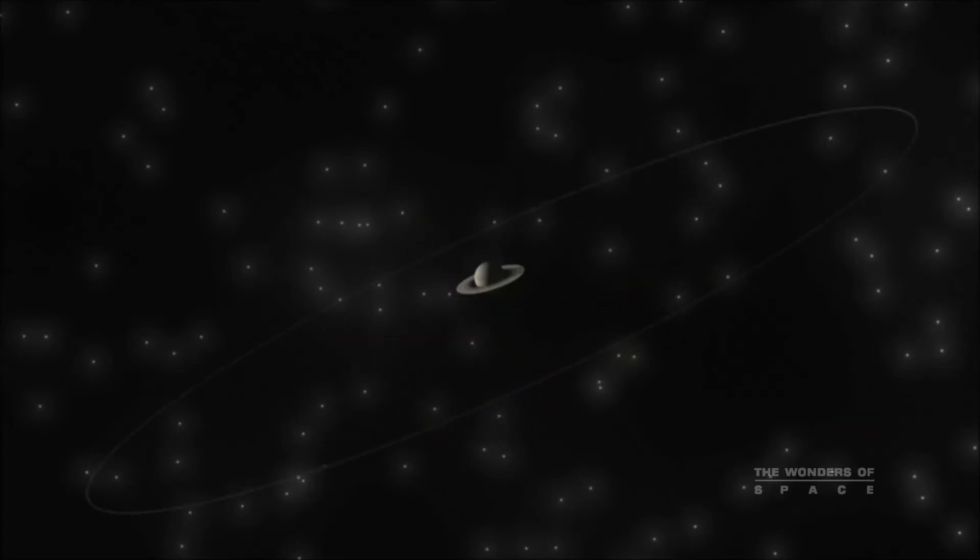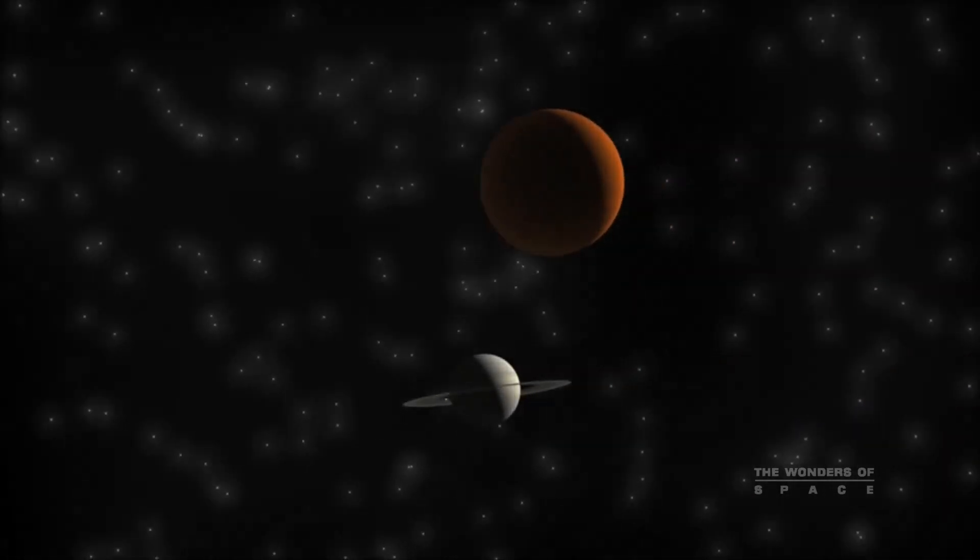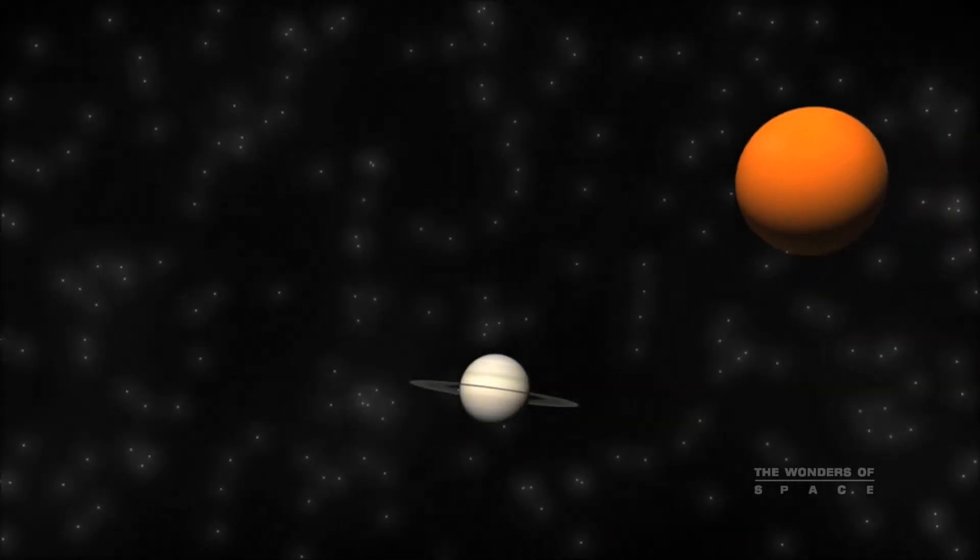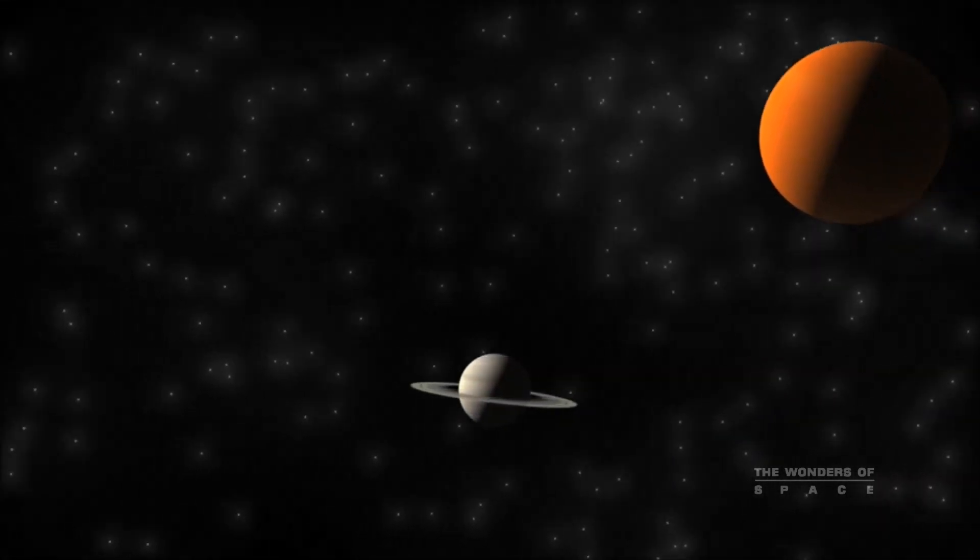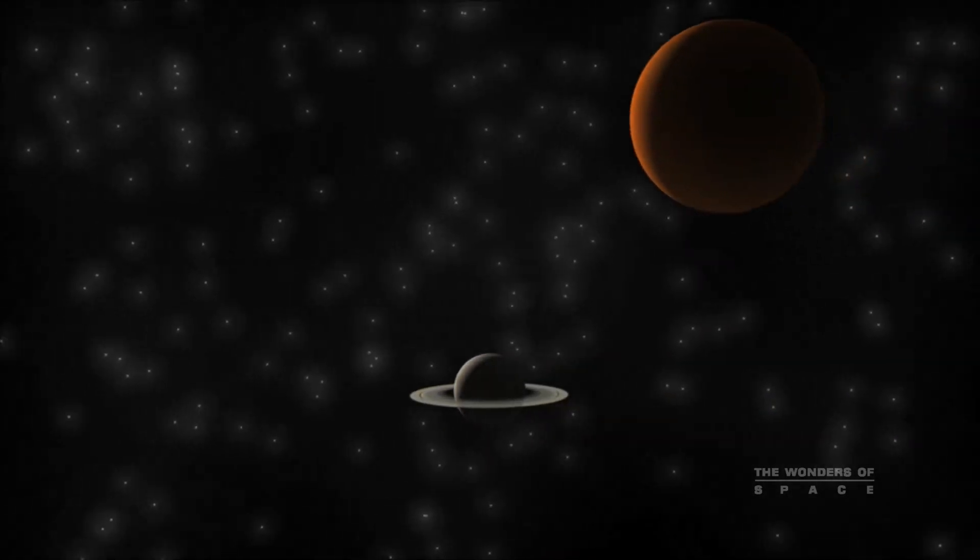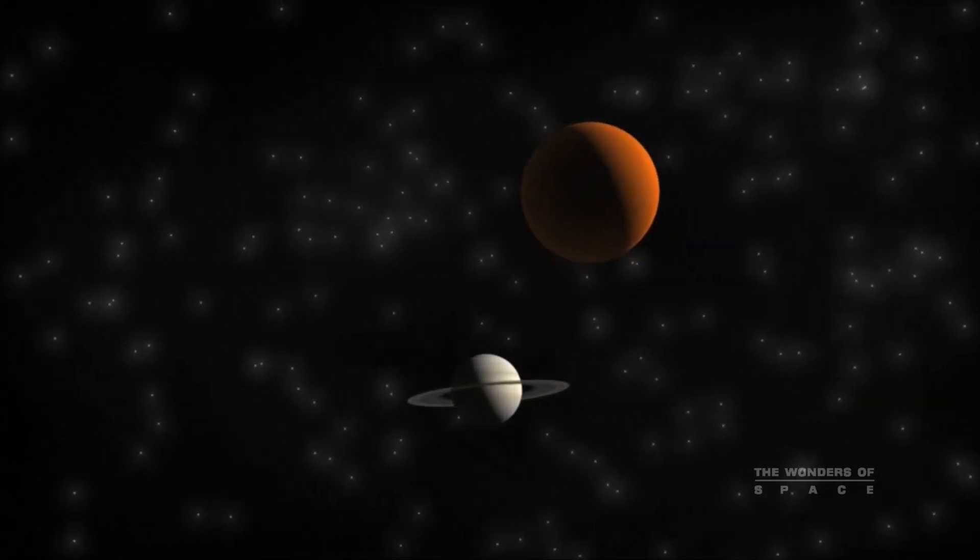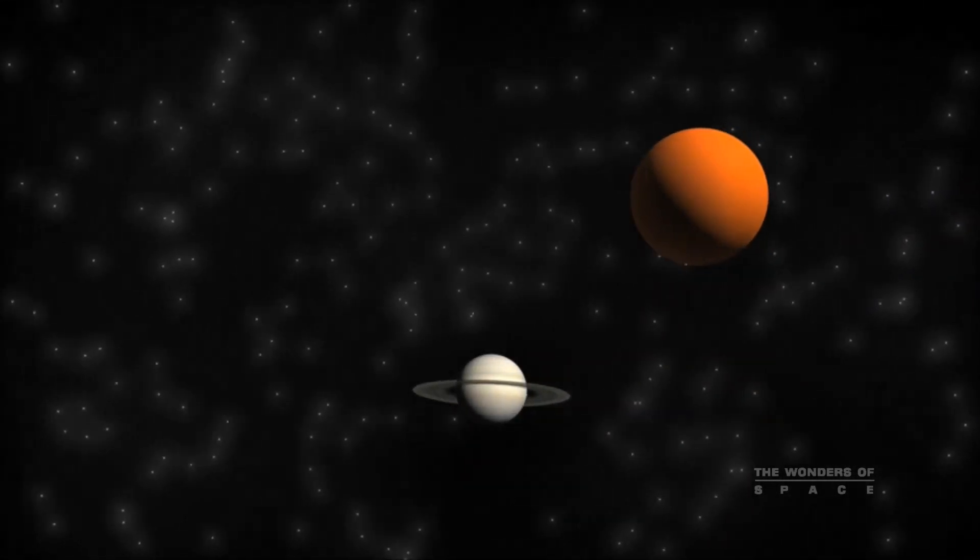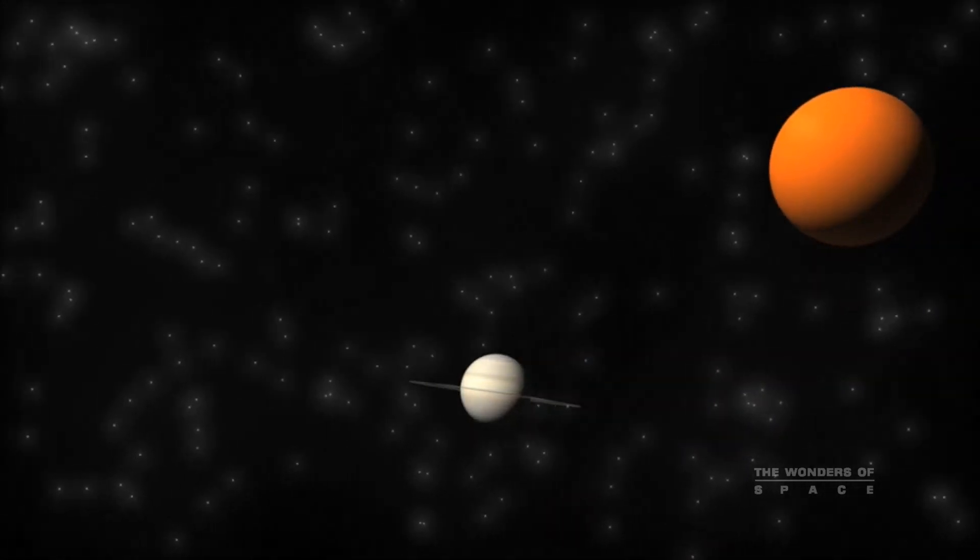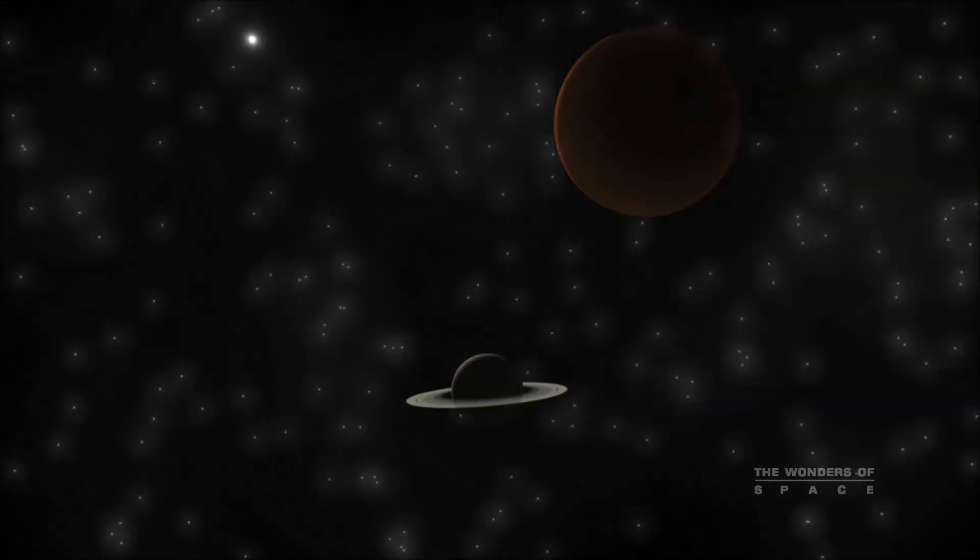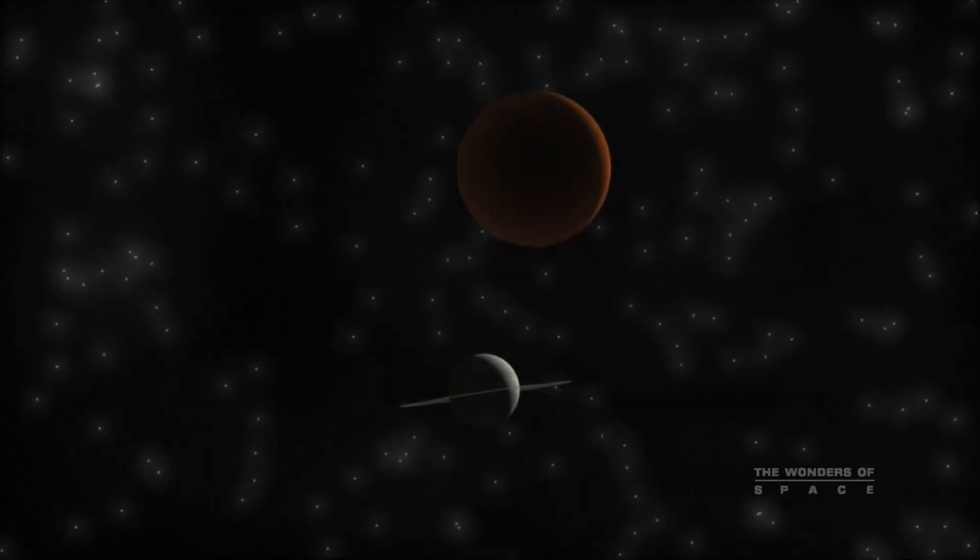Like Jupiter, Saturn also has dozens of moons, and one of them is particularly notable. Titan is the second largest moon in the solar system, and it possesses an atmosphere remarkably like Earth's. It is primarily composed of water ice and rocky material. It is even possible that under the clouds and surface ice, Titan has liquid water and maybe even microbial life. It is 50% larger in diameter than our own moon, and 80% more massive.